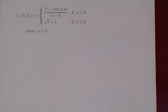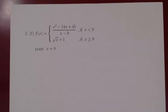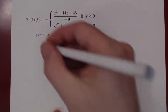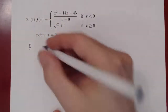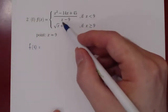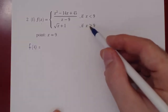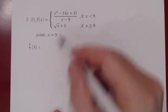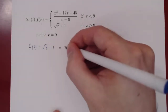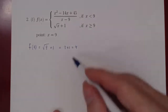Let's look now at problem 2F. Same question, different function, different point. The question is whether or not f(x) is continuous at x equals 9. As before, the first question is: does f(9) exist? When x is exactly equal to 9, which satisfies x greater than or equal to 9, f(x) is the square root of x plus 1. So this would be the square root of 9 plus 1, which is 3 plus 1 equals 4. The function is defined at 9 and the value is 4.